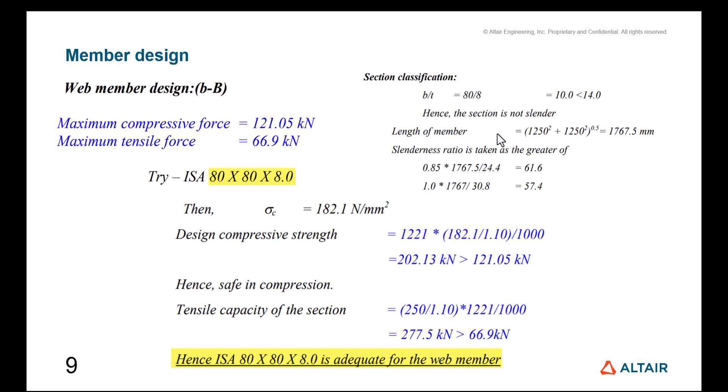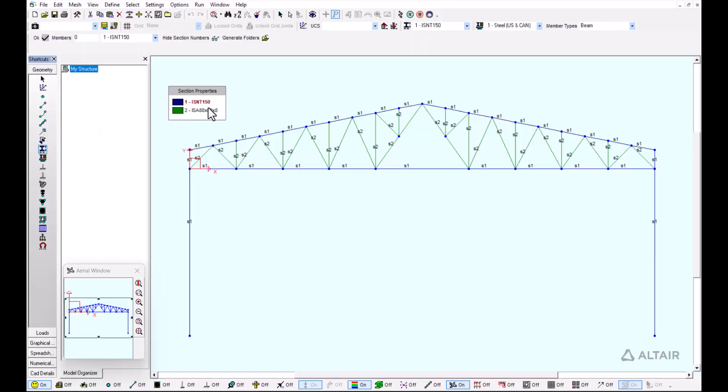Due to the length of the member, the slenderness ratio is taken as the greater of 61.6 and 57.4, so we take 61.6. That gives us our design compressive strength of 202.13 kilonewtons, which is bigger than the 121 kilonewton compressive force, so it's safe for compression. When it comes to tension, the tensile capacity is 275.5 kilonewtons, which is more than enough to resist our tensile force of 66.9 kilonewtons. We know that this section, the ISA 80 x 80, is adequate. We can add these web members to the full truss.